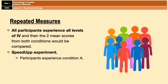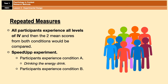In our Speed Up experiment, participants would experience condition A first — the energy drink condition — and then afterwards condition B, the drinking water condition. The mean number of words spoken in both conditions would then be compared.